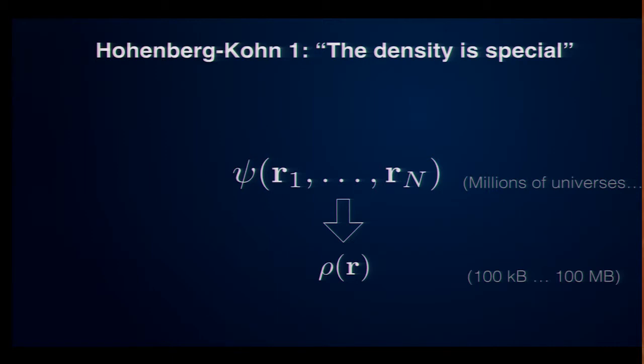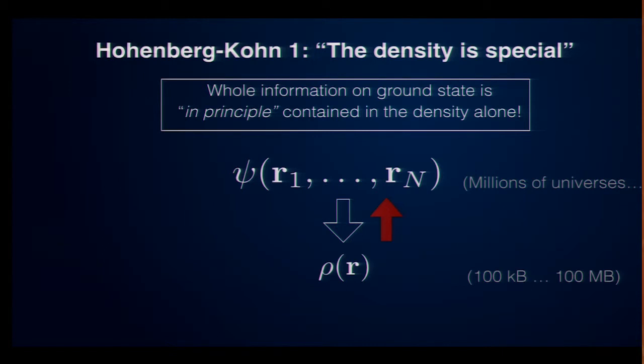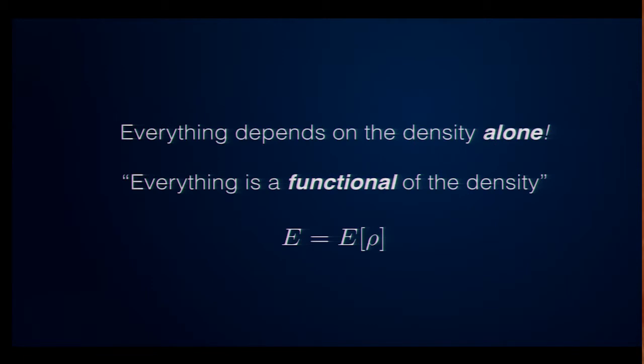It tells you that you can turn this relation around and start from the density and you have a unique way from that density to calculate the wave function, which means that those two very different objects contain the very same information. So, everything that is contained in this huge wave function is also contained in the density. In principle, this is one of those mathematical existence theorems that tells you it's in there, but it doesn't tell you how to get it out. In even simpler words, it tells you everything you might ever want to calculate about a quantum mechanical system is contained in a density alone. The density is everything you will ever need. And physicists like to put this in more mathematical terms and say everything is a function now of the density, and this is what gave the theory its name.